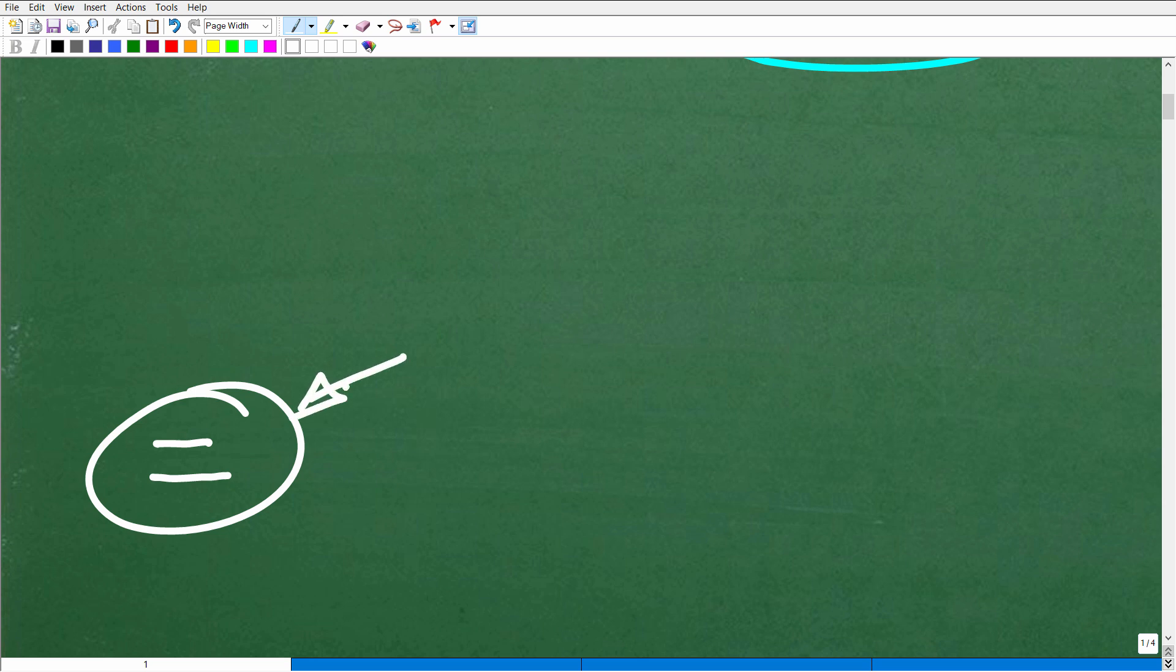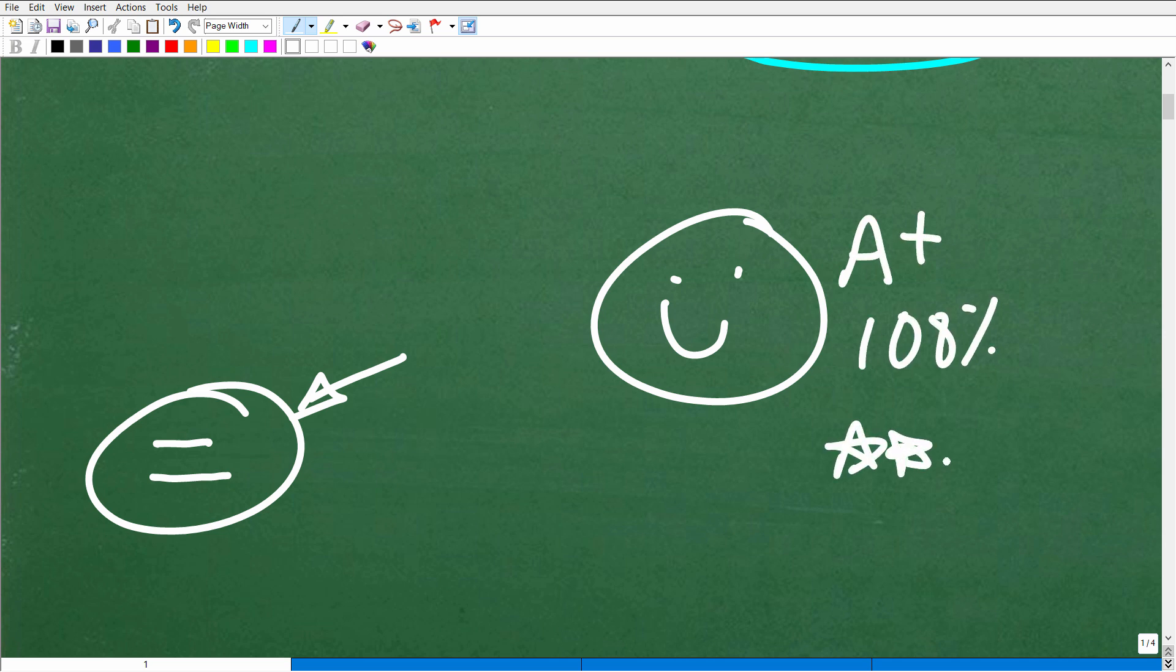Let's give you a nice little happy face, an A+, 100%, and a few stars so you can celebrate your understanding of vertical angles because it seems to me that you know exactly what you're talking about.